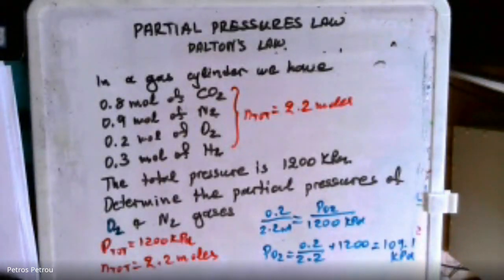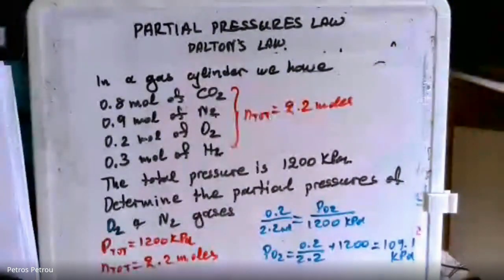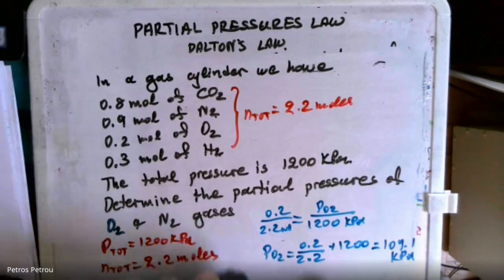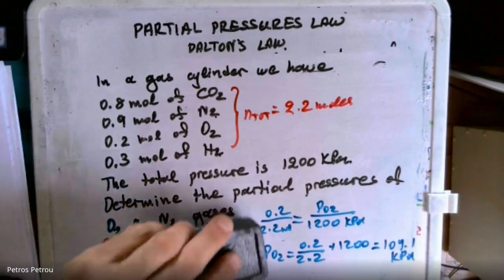So you could do a similar thing for the case of the nitrogen, the only difference in the case of nitrogen, you will have to put the 0.9 here, as opposed to the 0.2. In the case of nitrogen, I'm going to do it. Let me erase. Are we okay with this? It's marked?